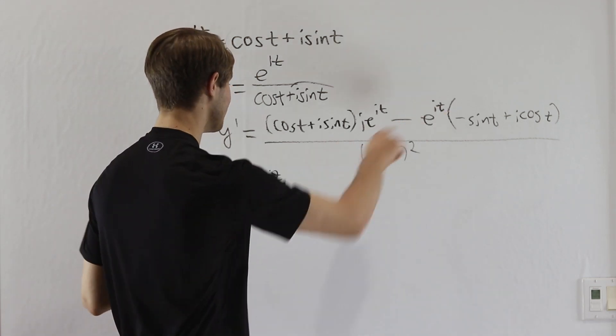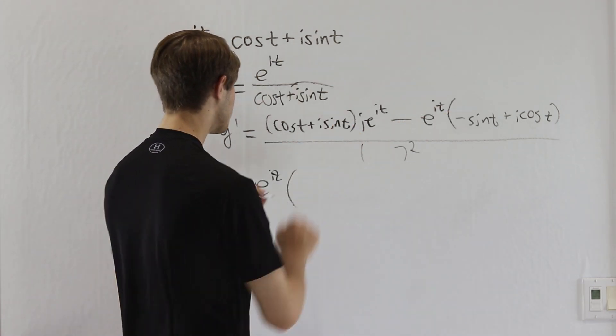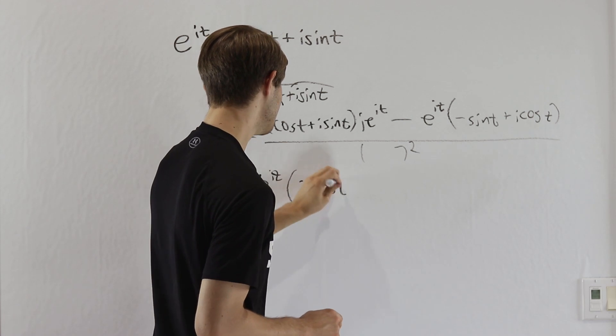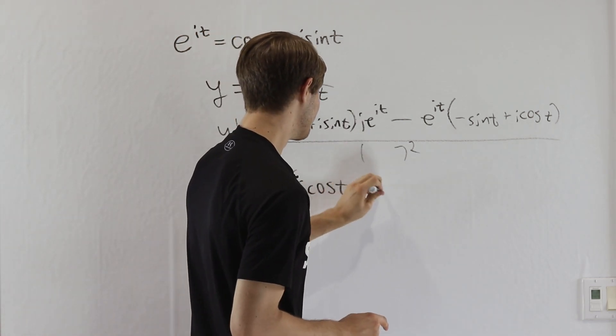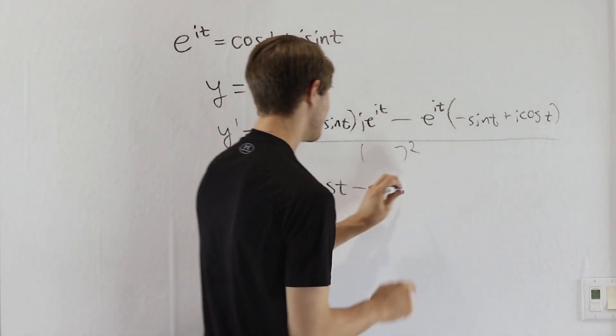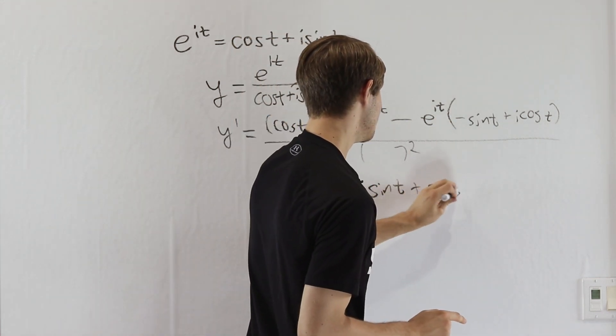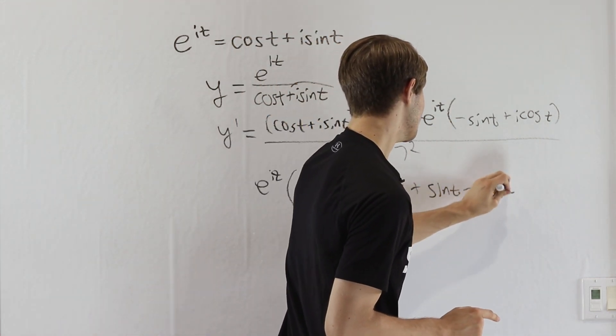We have an e to the it in everything, so let's factor that out. Then if we distribute this i in, we get i cosine t, and then i times i is negative 1, so minus sine t. Then over here we get minus and minus sine t is plus sine t, and then minus i cosine t.